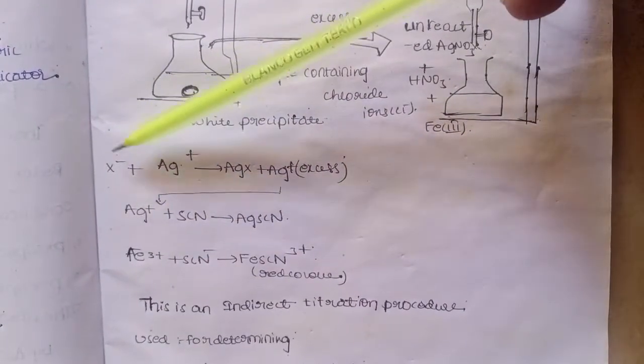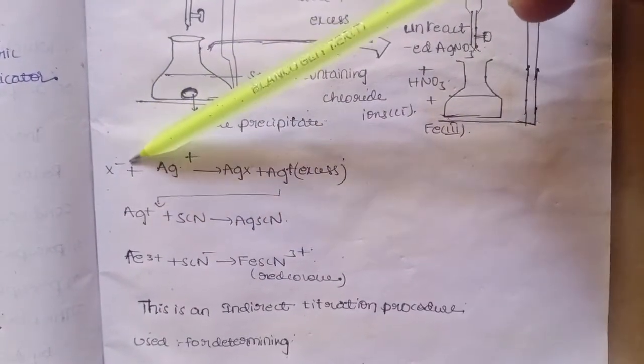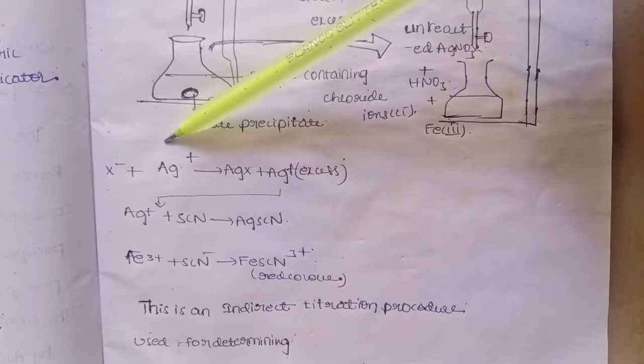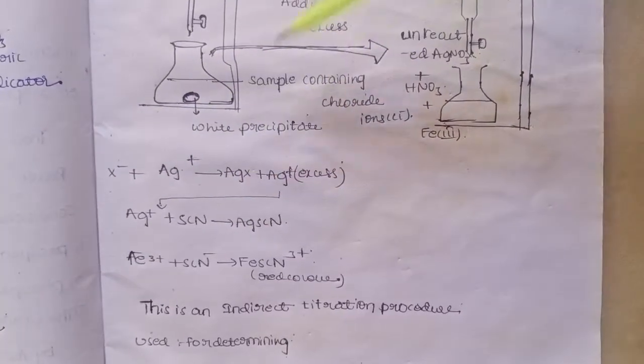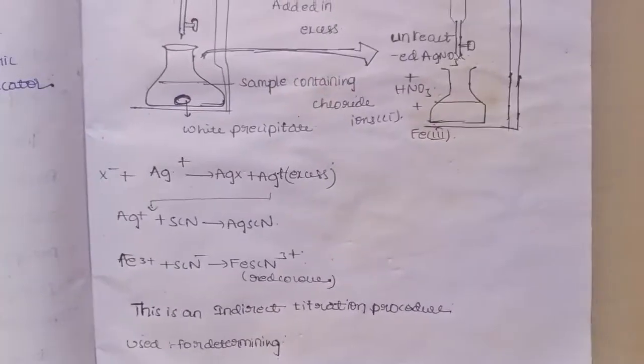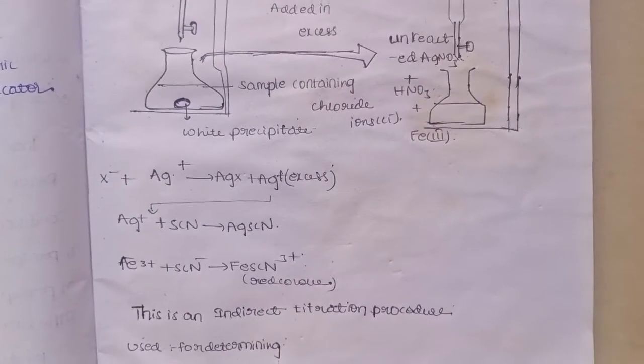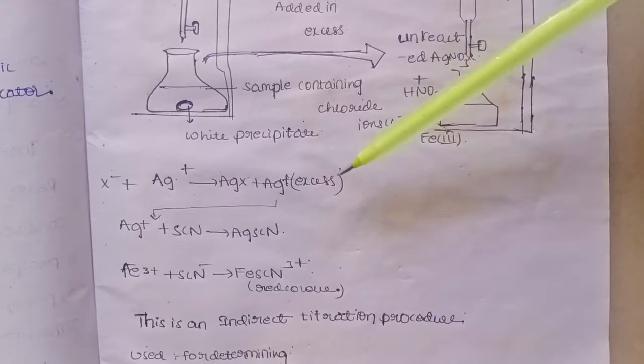Halides such as chloride (Cl-) react with Ag+ to give AgX — that is, silver halide (e.g., silver chloride). The excess Ag+ remaining unreacted is what gets back-titrated with thiocyanate in the second step of this indirect titration.